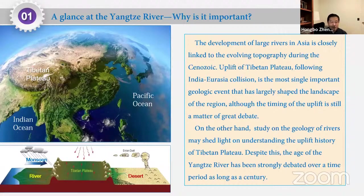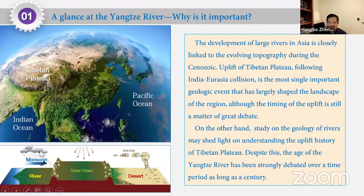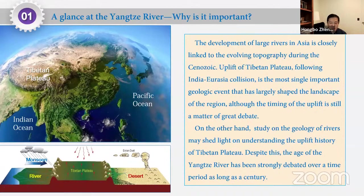The development of large river systems in Asia is closely linked to the evolving topography during the Cenozoic uplift of the Tibetan Plateau, following the India-Eurasia collision — the single most important geological event that has largely shaped the landscape of the region. Although the timing of the uplift is still a matter of great debate, study of river geology may shed light on understanding the uplift history of the Tibetan Plateau. Despite this, the age of the Yangtze River has been strongly debated over a period as long as a century.